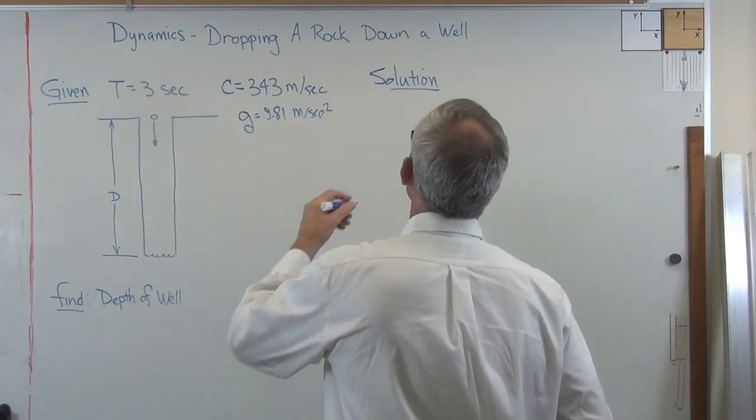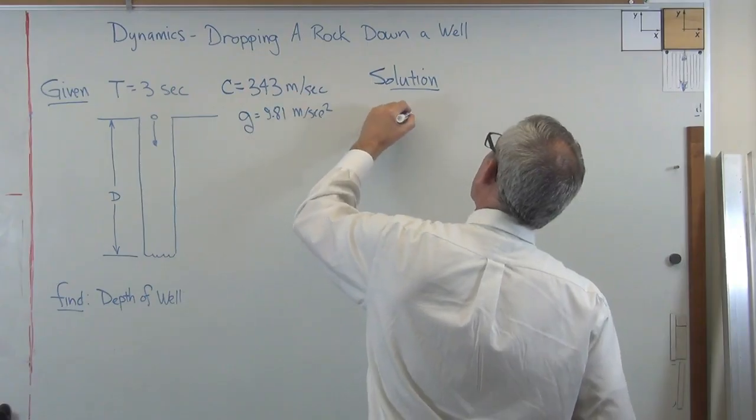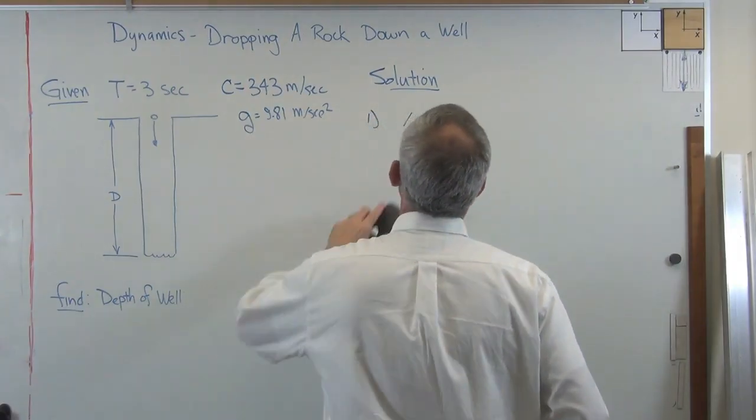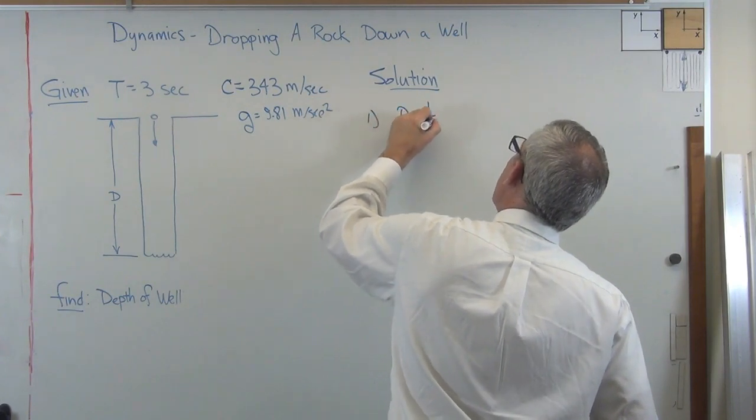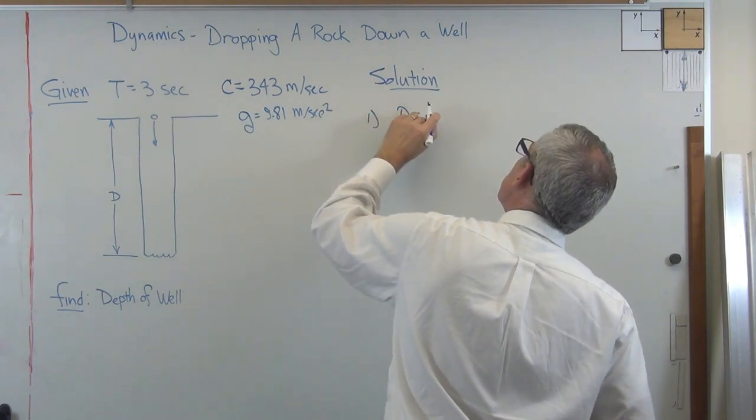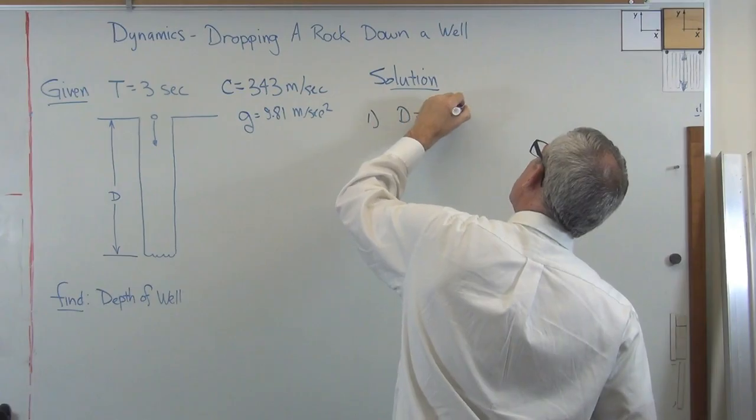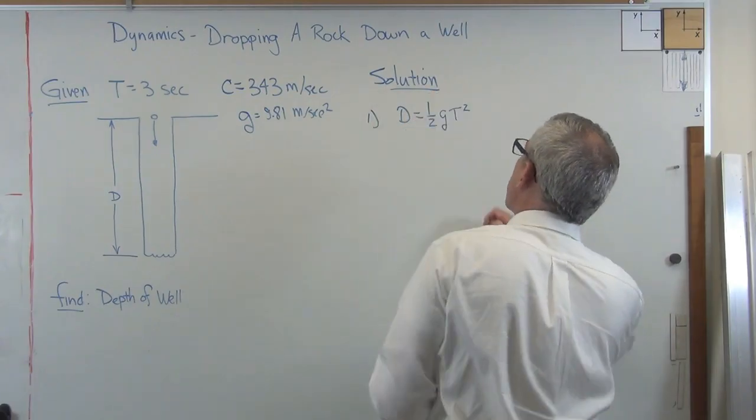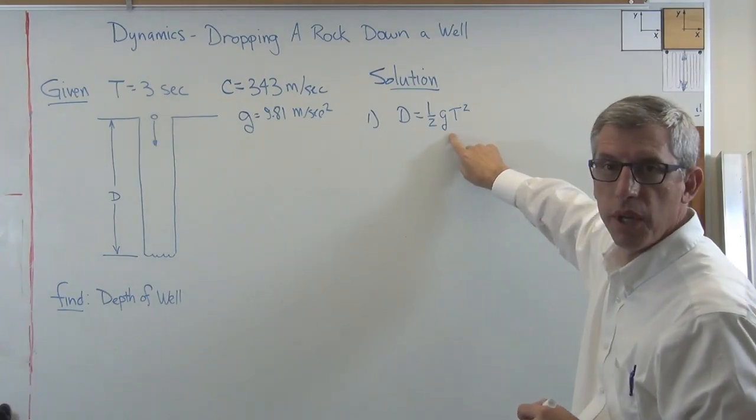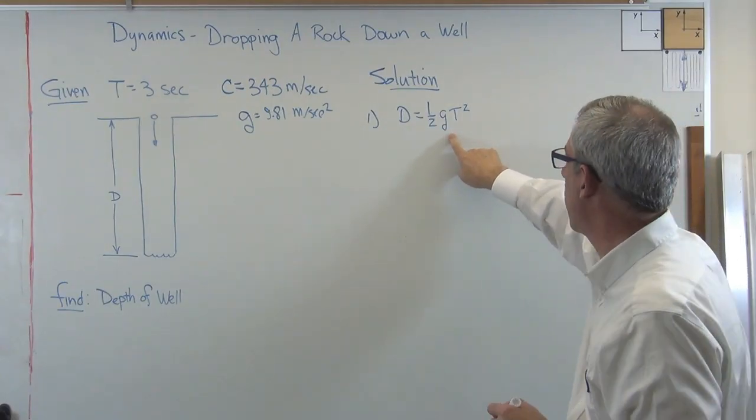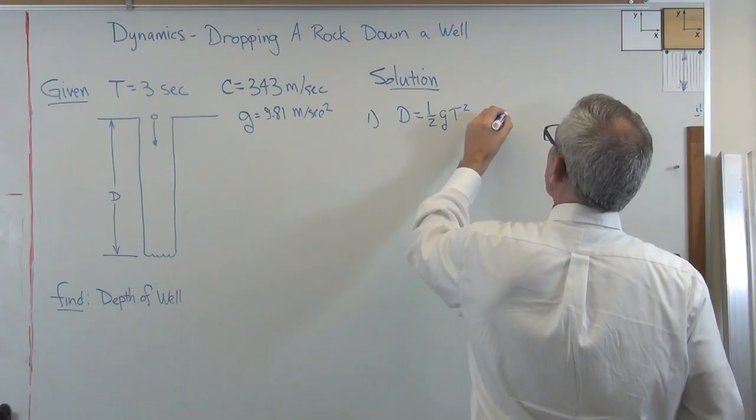Okay, so one, let's see, we know that D equals one half g T squared. Okay, that's a basic equation in physics and dynamics, one half a T squared, but here a is the acceleration of gravity so we can write...